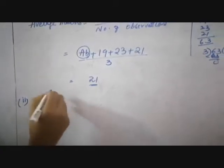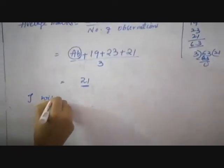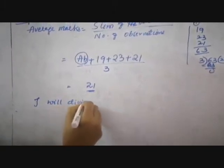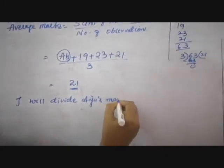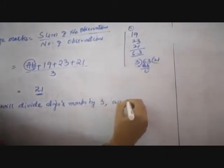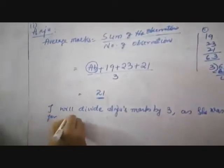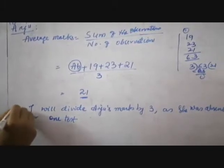But you have to write the statement children. Will you divide by 3 or 4? I will divide Anju's marks by 3, as she was absent for one test. This is about the second bit.